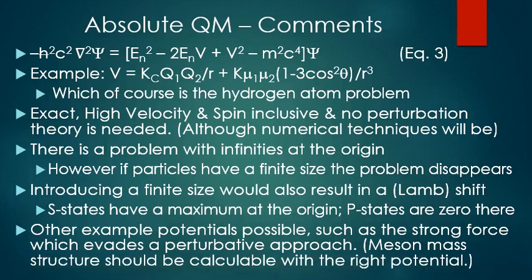As an example use of the new quantum mechanical equation, we can consider the case of the hydrogen atom problem, where the potential consists of the Coulomb potential plus the spin-spin magnetic dipole potential. In this case, equation 3 is the exact, high-velocity and spin-inclusive quantum mechanical equation. There is no need for perturbation theory with the new quantum mechanical equation, although numerical techniques are likely needed to find solutions. Note that there is a problem with infinities at the origin, and while one could resort to renormalization, another approach is to postulate a small finite size to the particles. Such a postulate would also qualitatively predict the Lamb shift, as the S-state has a maximum value where the particle separation goes to zero, while the P-state has zero value there, which will lead to an energy shift. Beyond the hydrogen atom, equation 3 may find use for other potential conditions, such as the strong force, where a proper potential may yield the meson-mass spectrum.